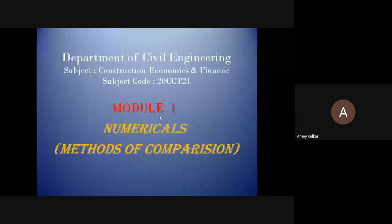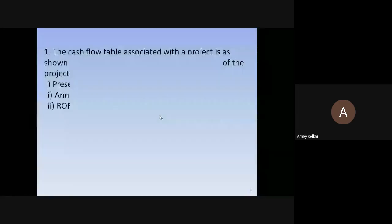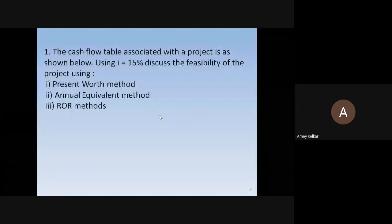The first problem: the cash flow table associated with the project is as shown. Using i = 15%, discuss the feasibility of the project using: first, present worth method; second, annual equivalent method; and third, rate of returns method.